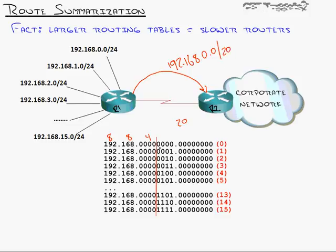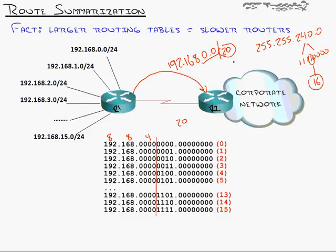Starting with the very first network, 192.168.0.0, with a /20 — that corresponds to a subnet mask of 255.255.240.0, or in binary 11110000 in the third octet. The increment would be 16. So 192.168.0.0/20 represents 192.168.0.0 through 192.168.15.255, perfectly encompassing all the routes behind Router 1.